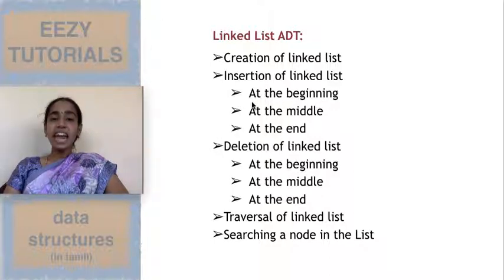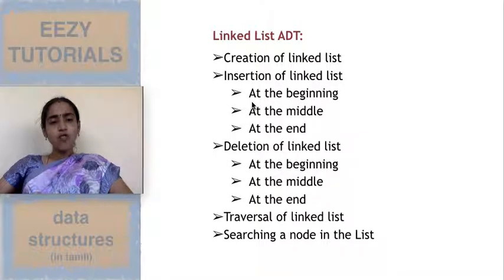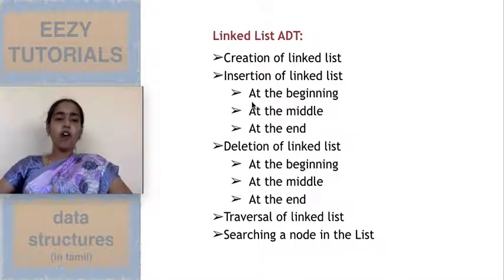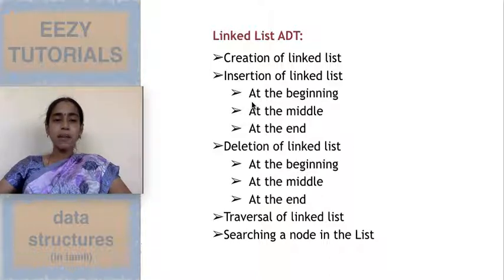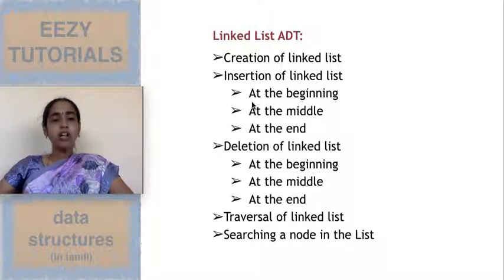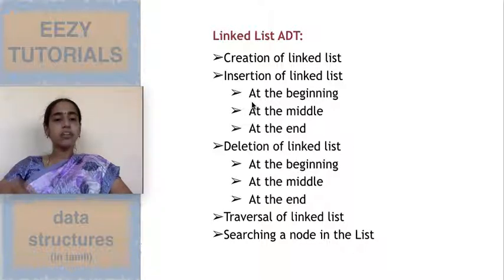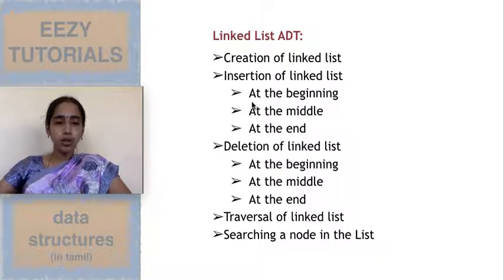Now we will see what is the ADT of a linked list. ADT means the set of operations which you are able to do with the data structure. For example, in mathematics, numbers are the data — the ADT operations are addition, subtraction, multiplication, and division. These are the set of operations you can do with that data.